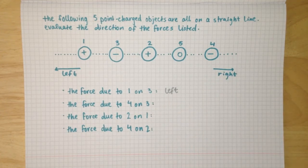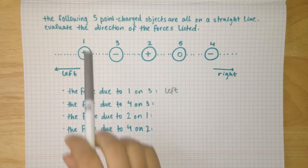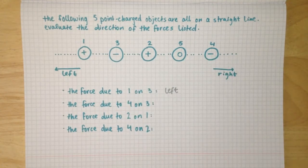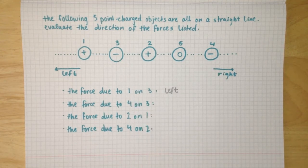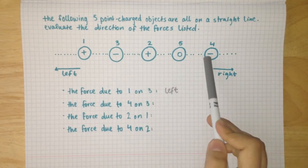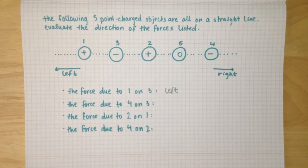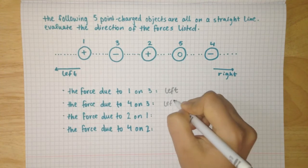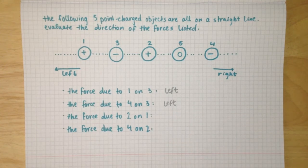The next one is the force due to four on three. Ignore the objects in between and just focus on three and four. They're both negative, and like charges repel each other, so four is wanting three to move away from it — towards the left. So this one will be left as well.